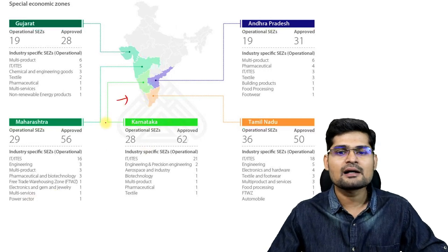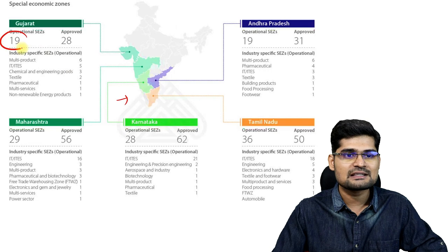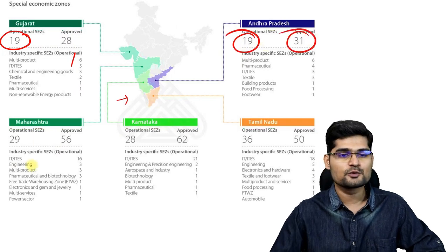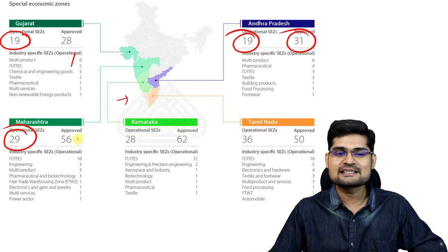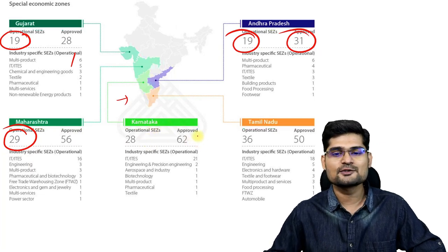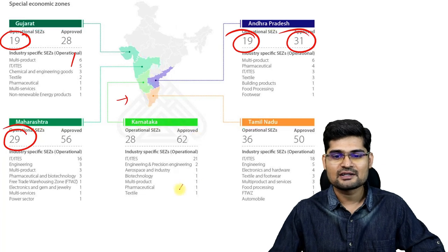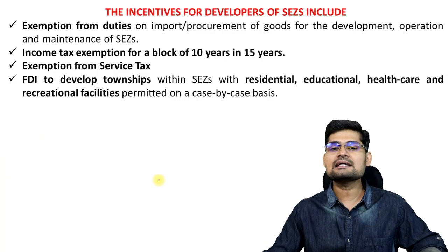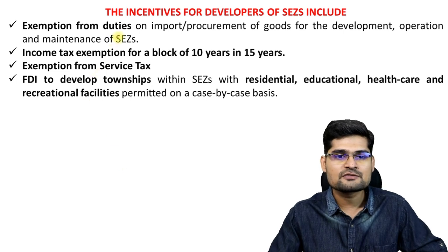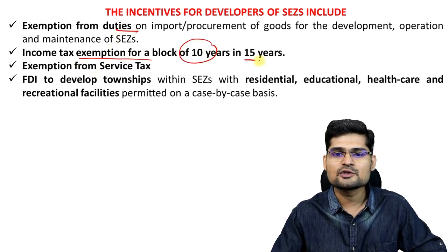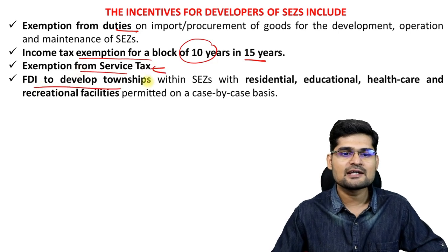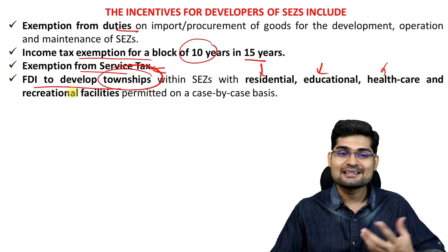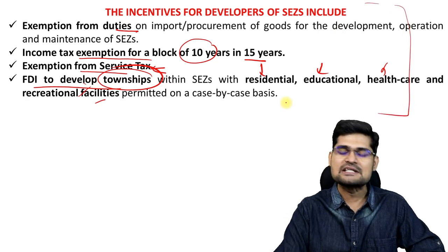Looking at the map of India, the top five states in terms of SEZs are: Gujarat with 19 operational and 28 approved; Andhra Pradesh with 19 operational and 31 approved; Maharashtra with 29 operational and 56 approved; Karnataka with 29 operational and 62 approved; and Tamil Nadu with 36 operational and 50 approved. Incentives for developers include exemption from duties, income tax exemption for 10 to 15 years, exemption from service taxes, FDI to develop townships with residential, educational, healthcare, and recreation facilities.